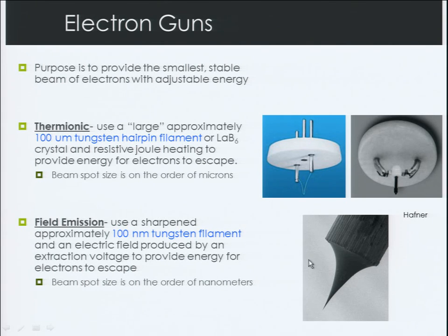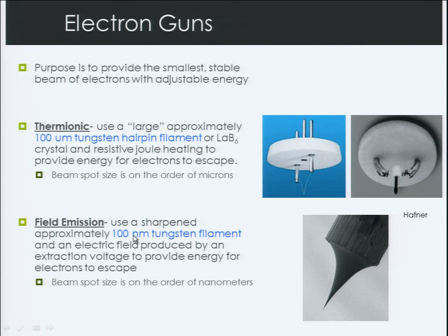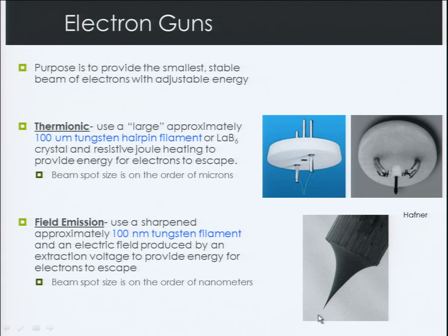In field emission, we have a quite different style tip — a sharpened tungsten filament sharpened to about 100 nanometer tip diameter, which is much smaller. We also use an electric field to extract or pull the electrons out of that tip. Notice that if we start with a 100 nanometer spot size, by the time we get to the end and focus in on the sample, we can have a beam spot size on the order of nanometers. The two biggest differences between thermionic and field emission are: field emission starts with a smaller tip, uses an electric field to pull electrons out rather than resistive Joule heating, and ends up with a much smaller spot size on the sample.